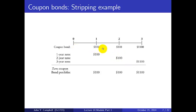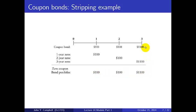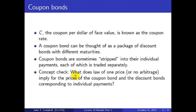Here's a coupon bond paying $100 coupon each period, and then $1,000 face value in the third period — so cash flows are $100, $100, and $1,100. That's equivalent to $100 face value of a one-year zero coupon bond, $100 face value of a two-year zero coupon bond, and an $1,100 face value of a three-year zero coupon bond. Adding up these three zero coupon bonds creates a portfolio with exactly the same cash flows as the coupon bond. I hope it's obvious what the law of one price or no-arbitrage condition implies for the price of the coupon bond versus the replicating portfolio of discount bonds.